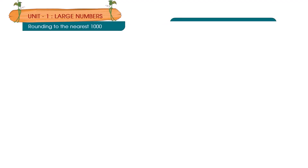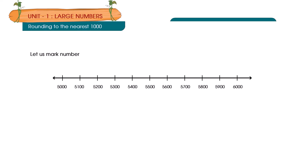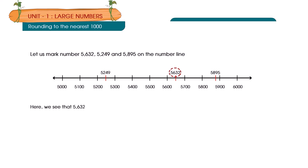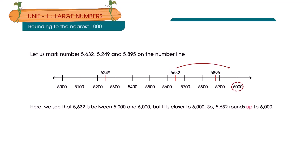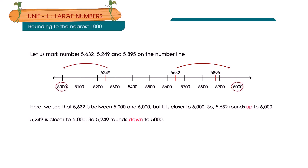Rounding to the nearest 1,000: let us mark 5,632; 5,249; and 5,895 on the number line. 5,632 is between 5,000 and 6,000 but closer to 6,000, so 5,632 rounds up to 6,000. 5,249 is closer to 5,000, so 5,249 rounds down to 5,000. 5,895 is closer to 6,000, so 5,895 rounds up to 6,000.